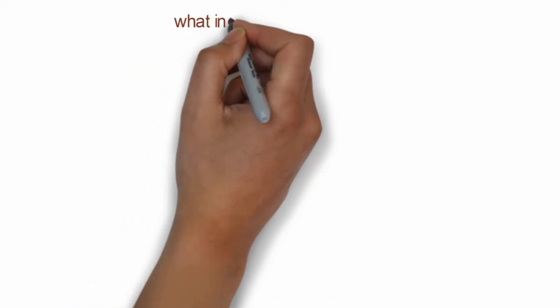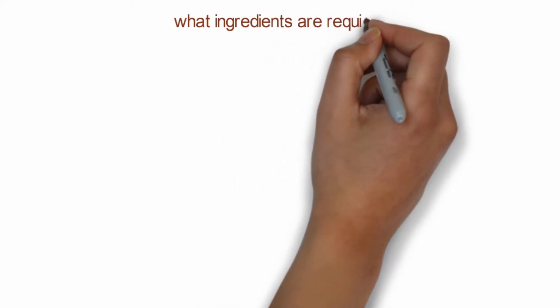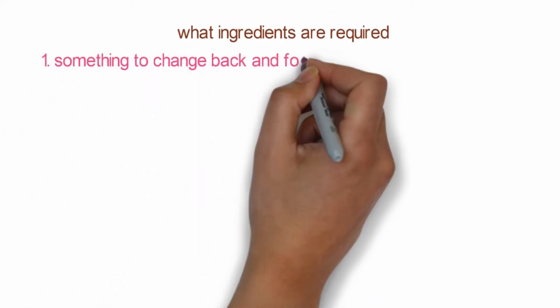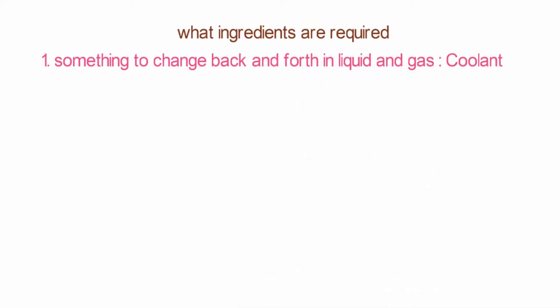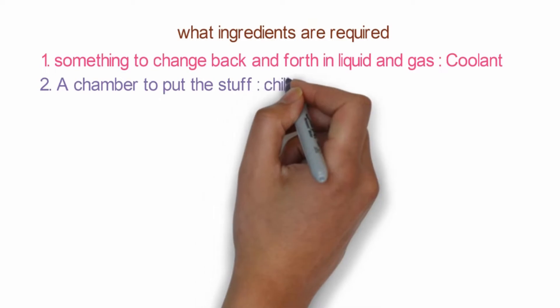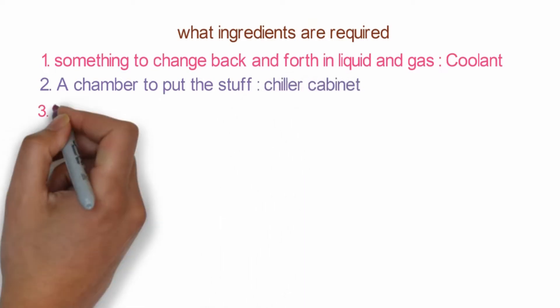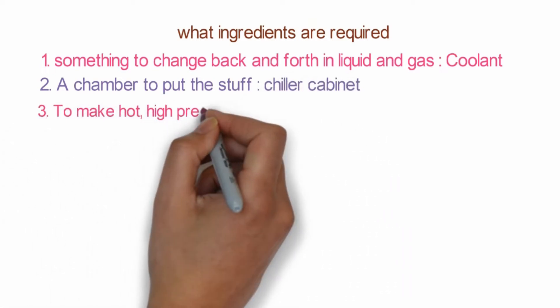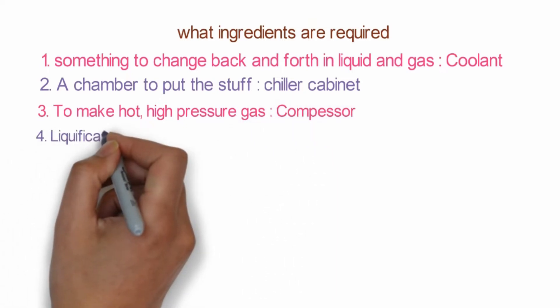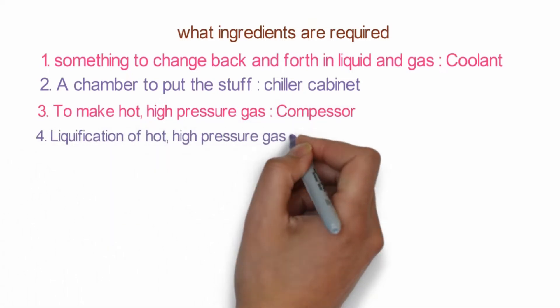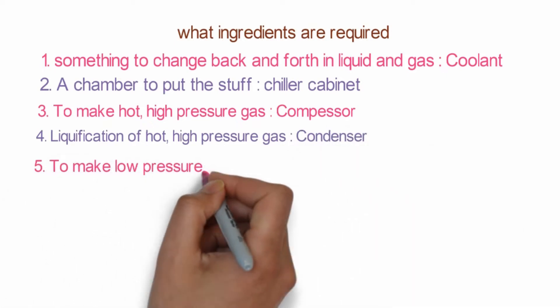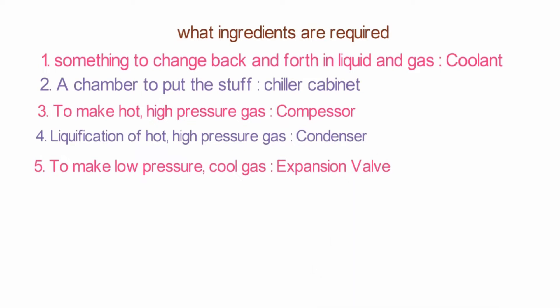So what all ingredients or inputs are needed for refrigeration? Something to change back and forth between liquid and gas—that is coolant. A chamber to put all our stuff—that is the chiller cabinet. To make hot high pressure gas—that is the compressor. Liquefaction of hot high pressure gas—that is the condenser.